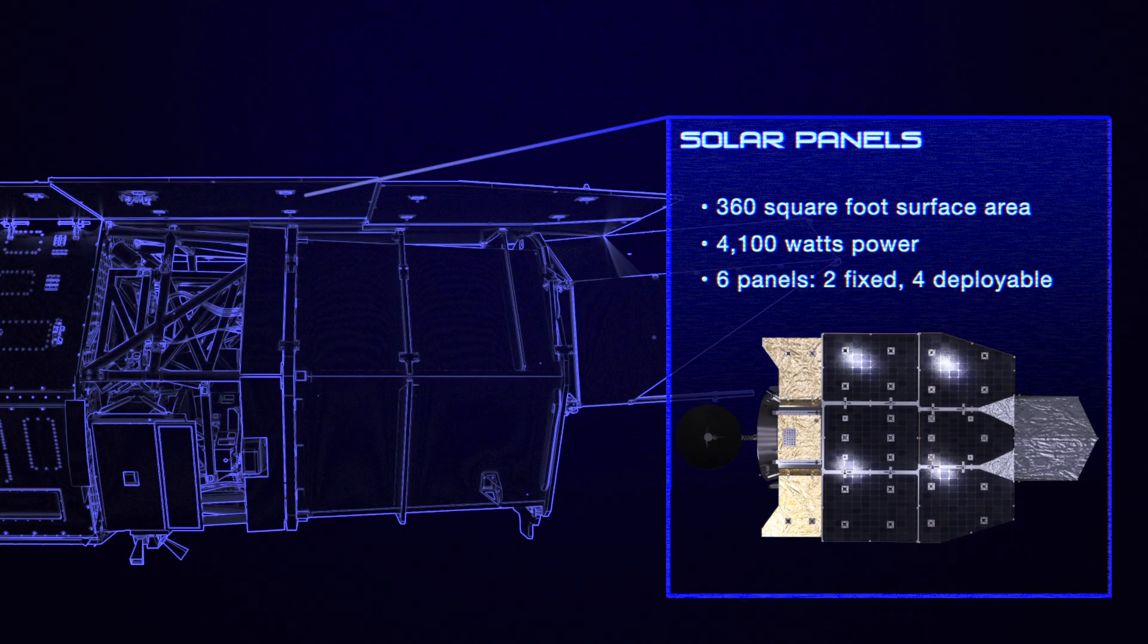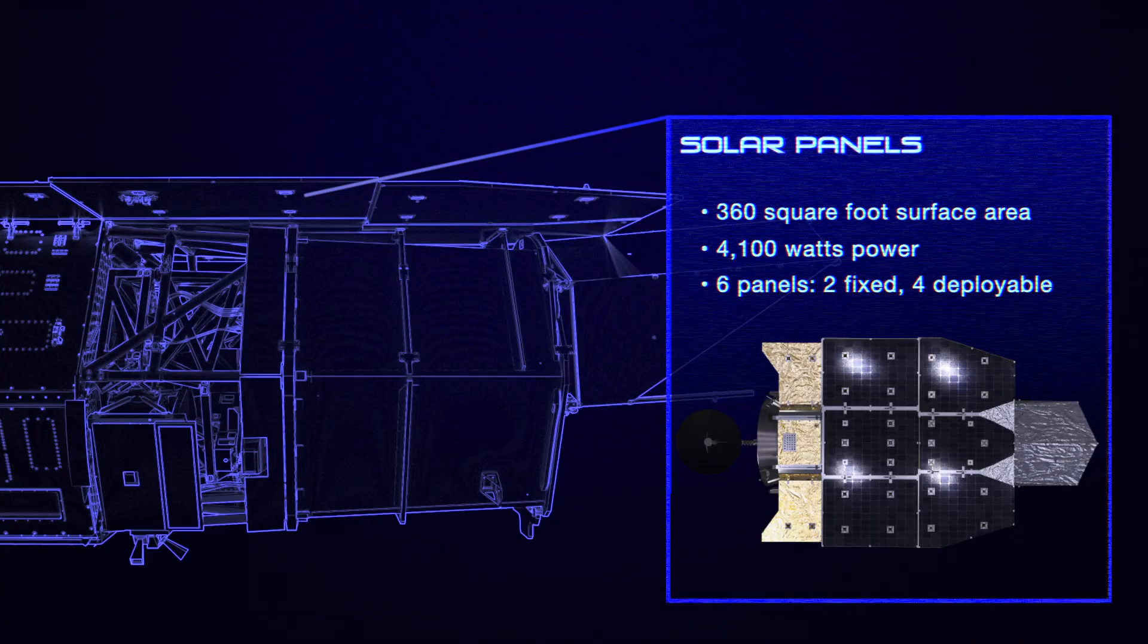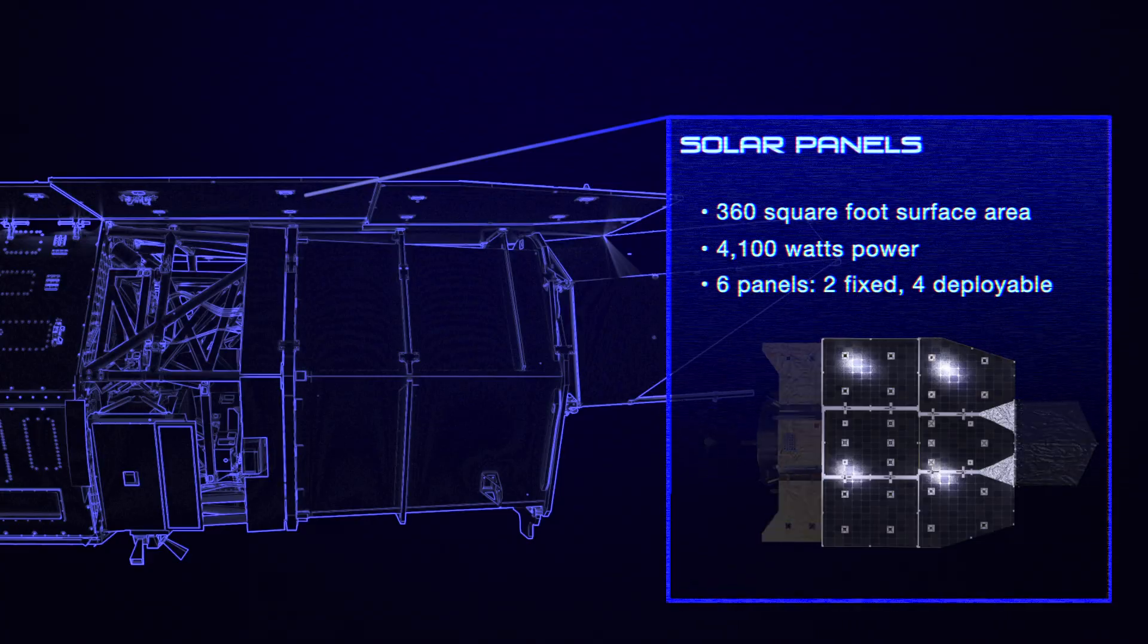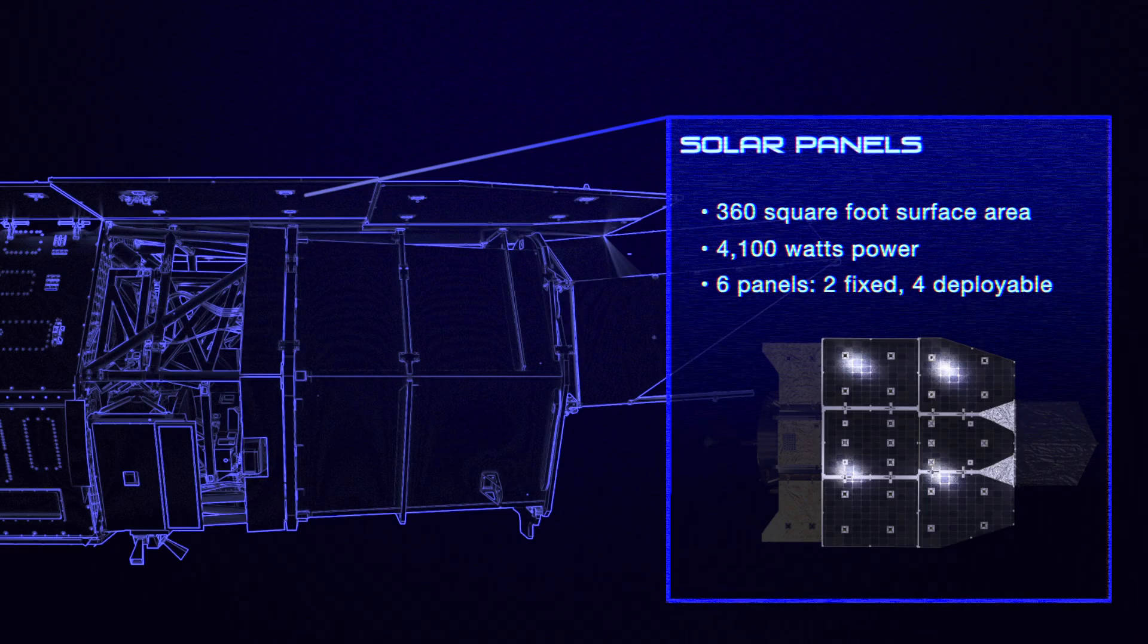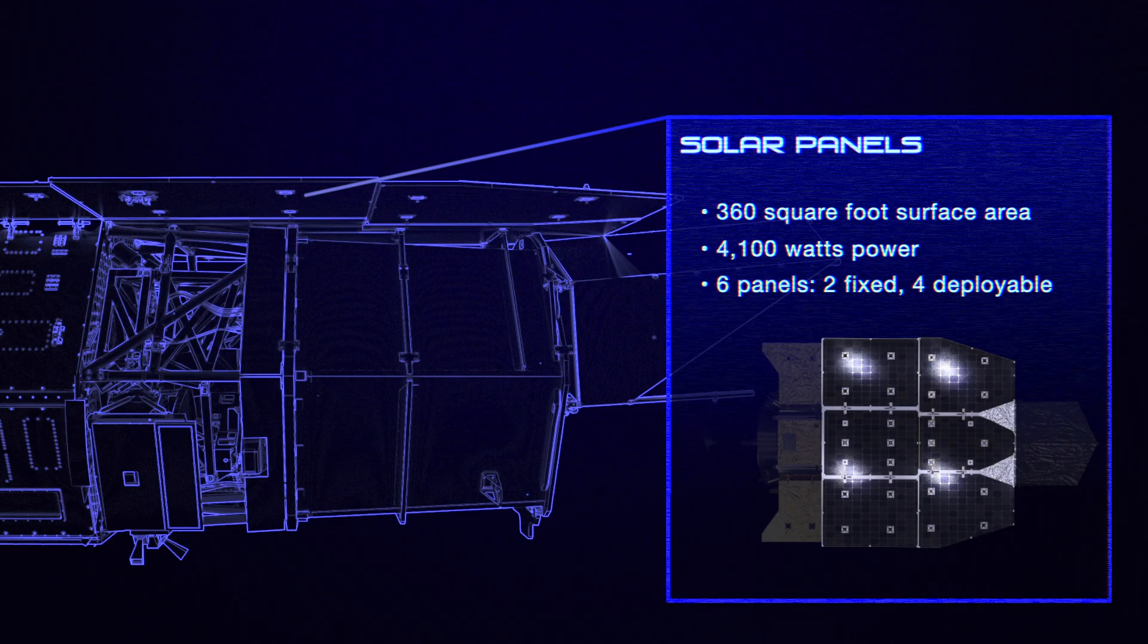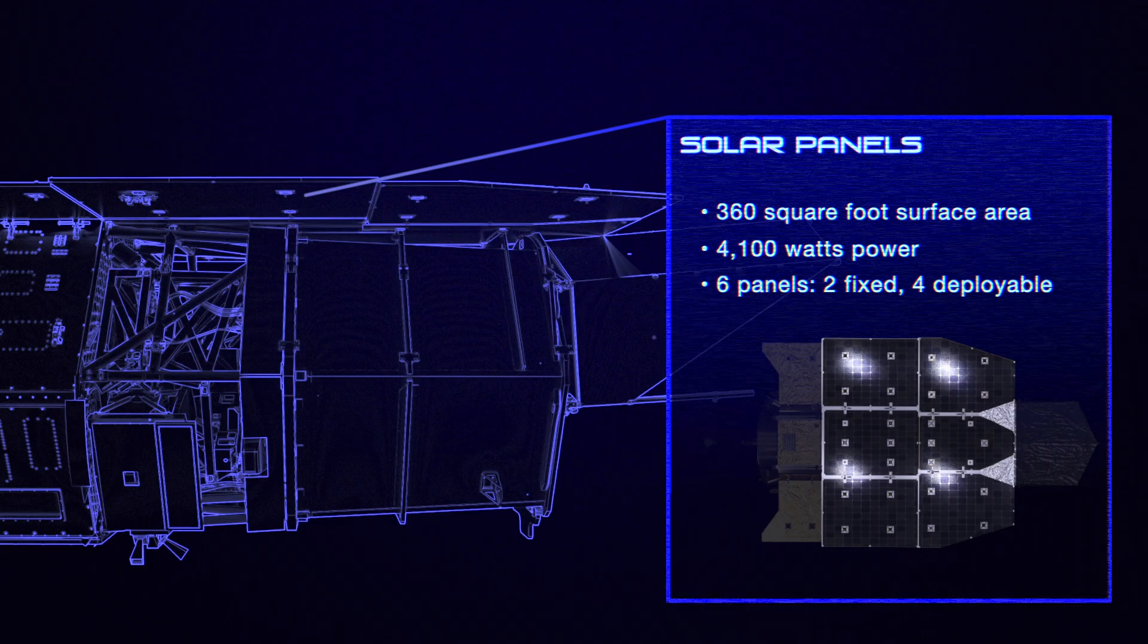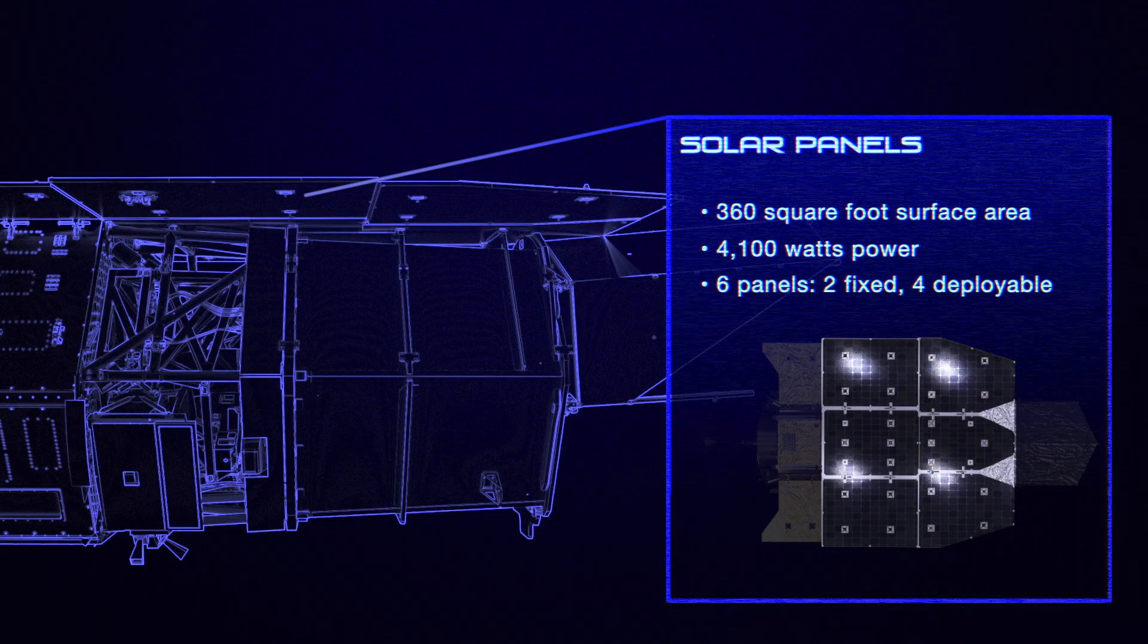The spacecraft's solar panels provide its power by converting sunlight into electricity. They also shade the spacecraft, helping to keep its instruments at their design temperatures. The solar panels will be able to provide 4,100 watts of power, enough to run two commercial microwave ovens.